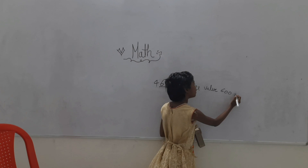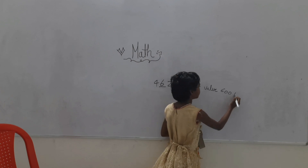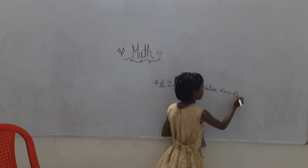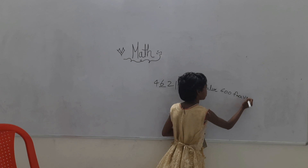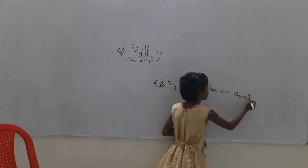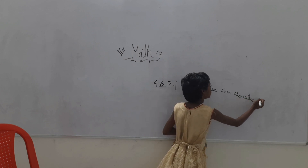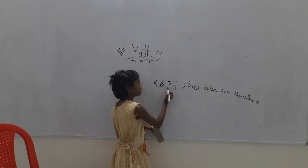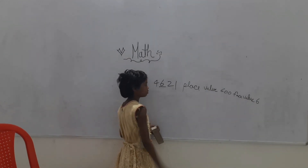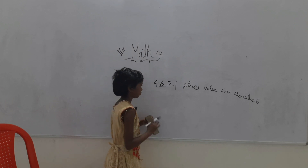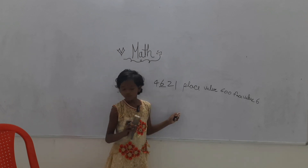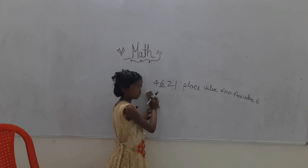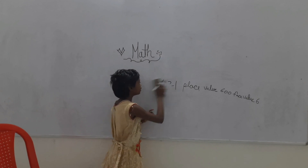And place value — value is 6, because this is colored. This place value and place value are also complete.